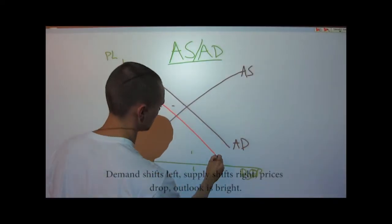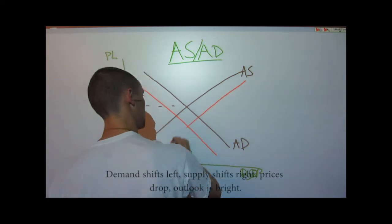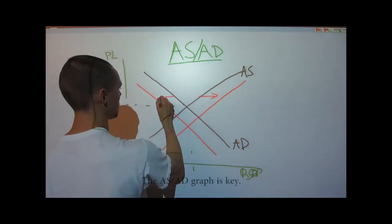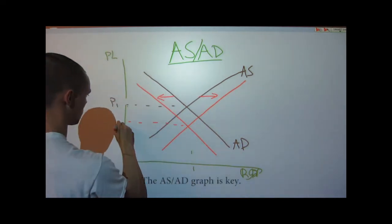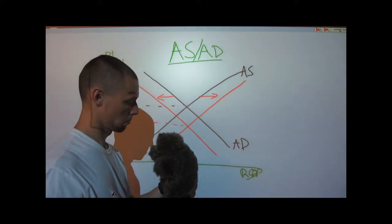Demand shifts left, supply shifts right. Prices drop, outlook is bright. The ASAD graph is key.